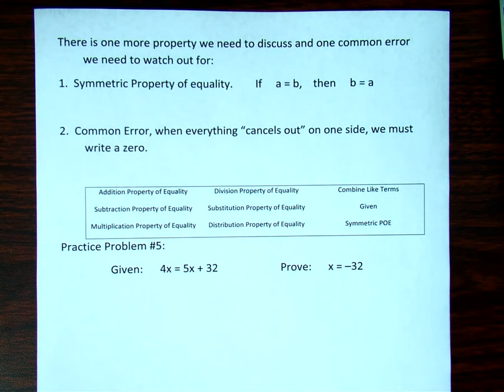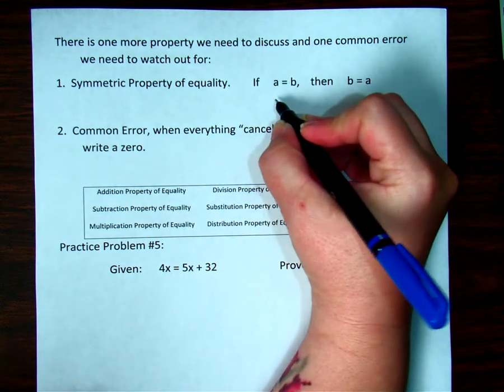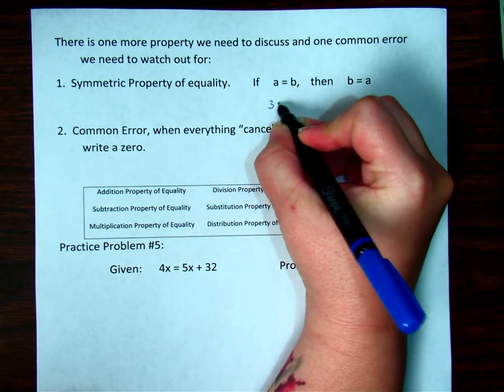The new property is called the symmetric property of equality, and it says if A equals B, then B equals A. So how we use that is sometimes we'll end up with a number, let's say 3 equals X,